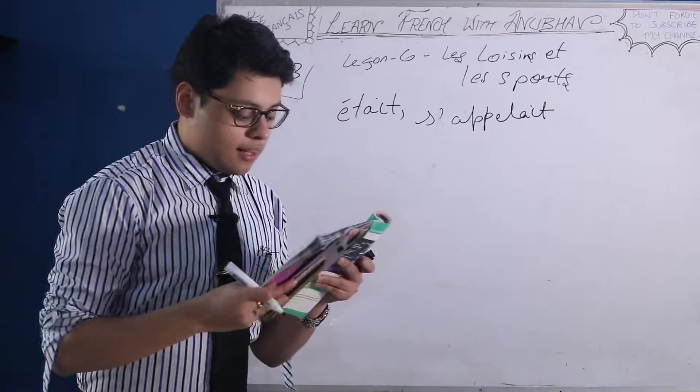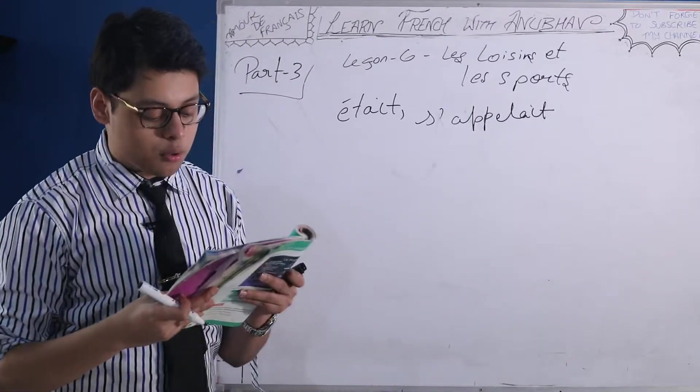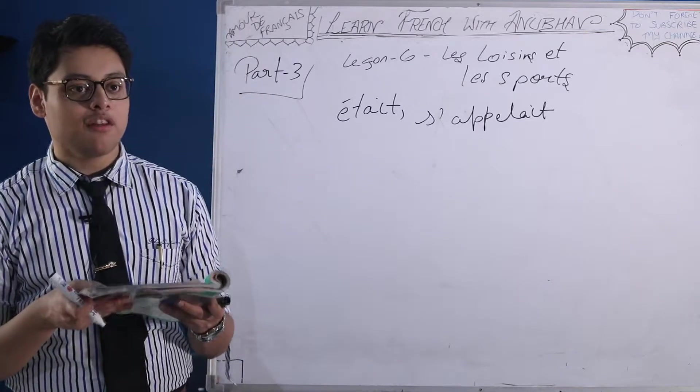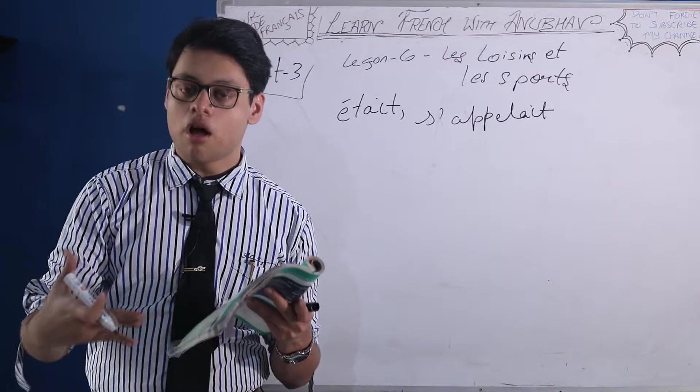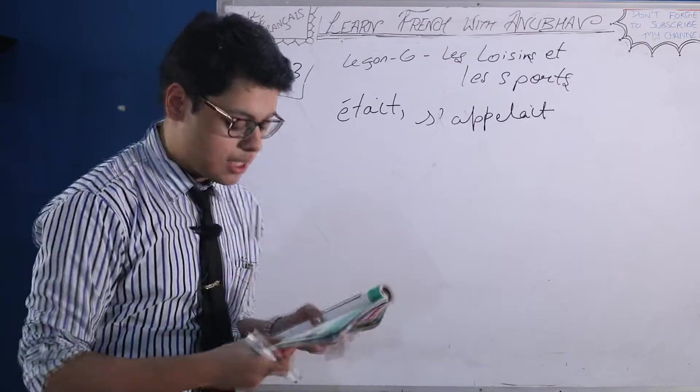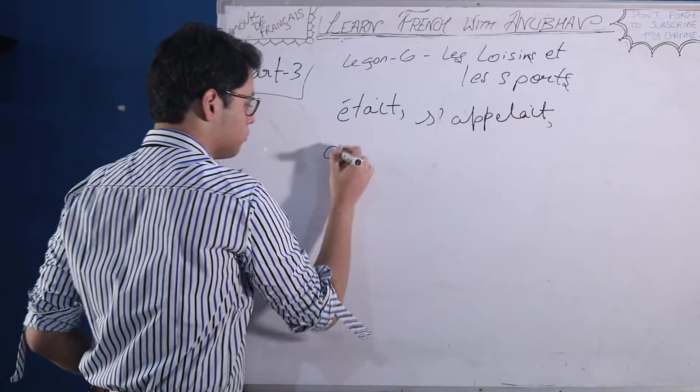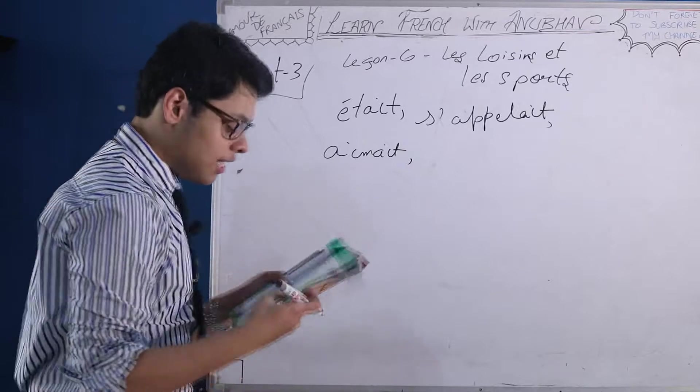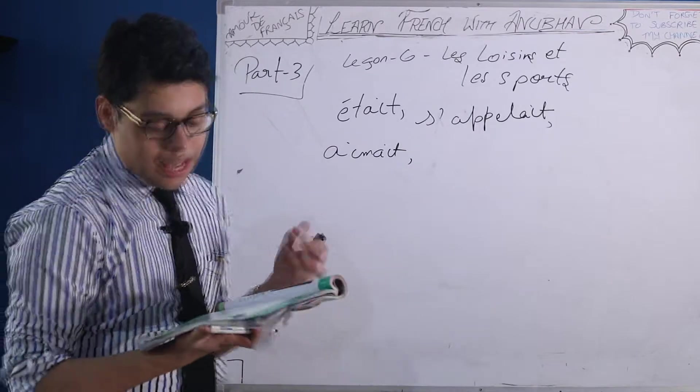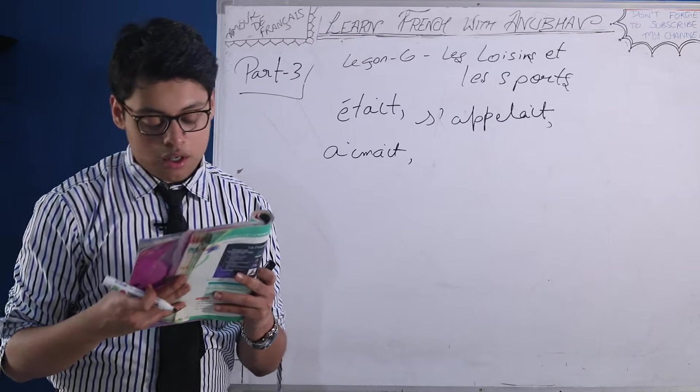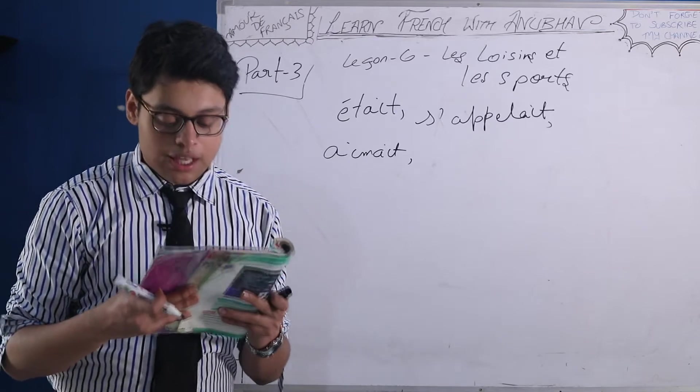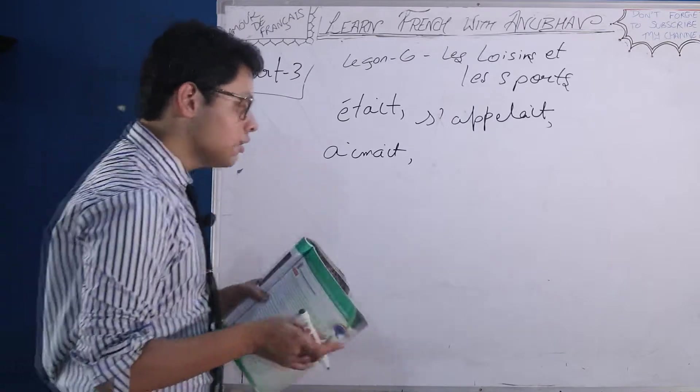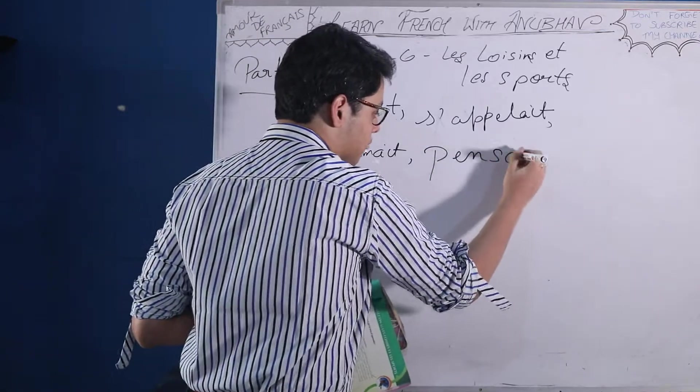Il dash avoir beaucoup d'argent. He had a lot of money. Again, having a lot of money in the past is not like a single event. Long one. Continuous event. So, again imparfait. He liked to have a lot of money. Il dash ka l'argent tout le temps. So, he spent the money all the time. He only spent the money all the time. So, again it's not a single event. So, imparfait.